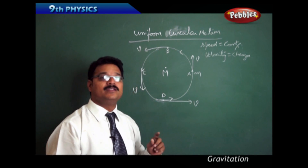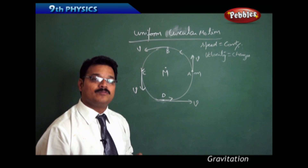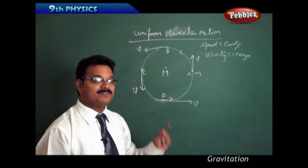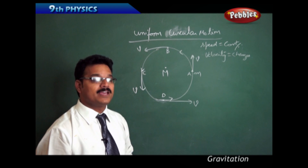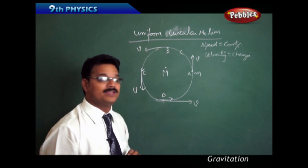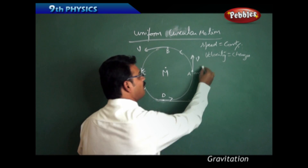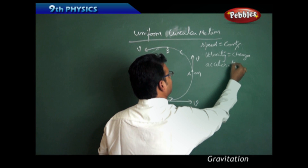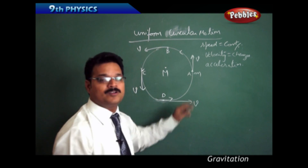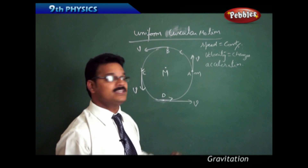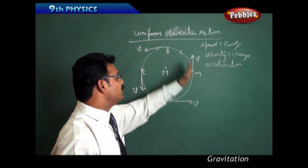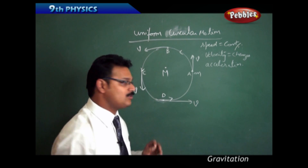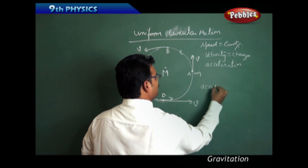In uniform circular motion, velocity is not constant — velocity changes. When velocity changes, recall from kinematics: when velocity changes there is a physical quantity affecting the motion of the body, and that physical quantity is acceleration. Whenever you have a change in velocity, you have acceleration. So uniform circular motion is also called accelerated motion.